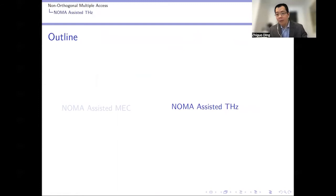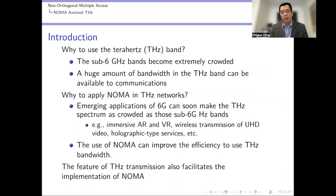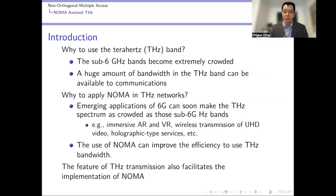Moving to the second part — terahertz communications. The use of terahertz for 6G is well motivated because the sub-6 GHz band is very crowded, whereas the terahertz band offers enormous bandwidth. However, even with that large bandwidth, the emerging 6G applications such as immersive AR and VR will still demand more than the terahertz band can readily provide, so we need to improve spectral efficiency for terahertz transmission.